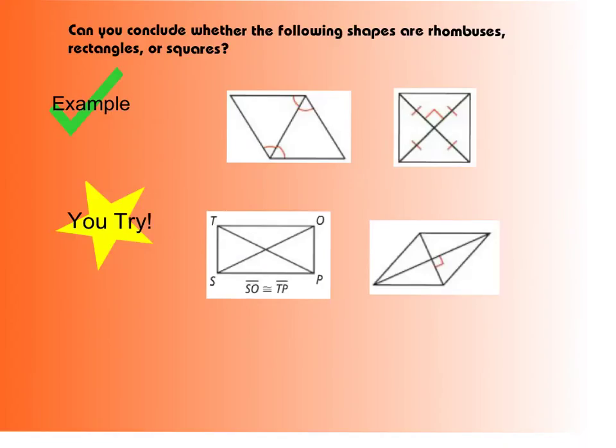So let's look at our first example here. Can you conclude whether the following shapes are rhombuses, rectangles, or squares? I'm looking for some of these properties to determine whether these things are rhombuses, rectangles, or squares. So in this first example,